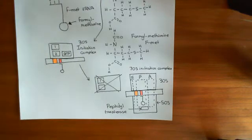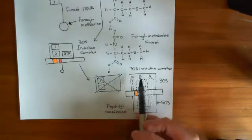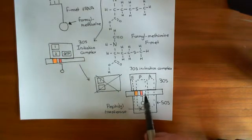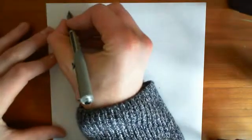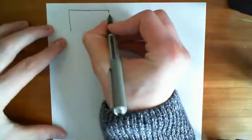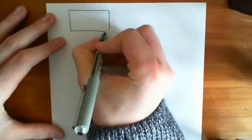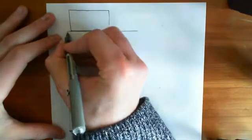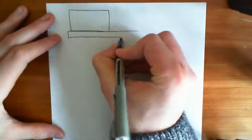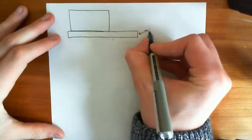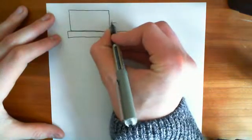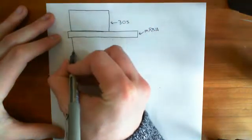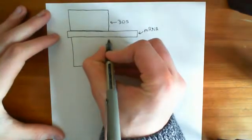We want to now look at the elongation process that this ribosome is going to undertake, because it's now ready to start actually building the polypeptide from this piece of mRNA. Drawing the 70S initiation complex: this is the 30S ribosomal subunit here. In between the 30S and the 50S ribosomal subunit, we have the piece of mRNA. This is our 30S ribosomal subunit, and then we have the 50S ribosomal subunit. Together, that forms the whole ribosome.